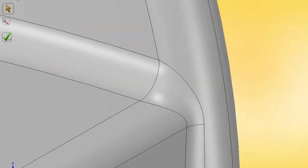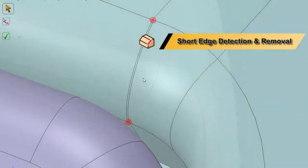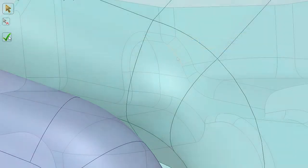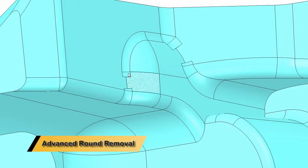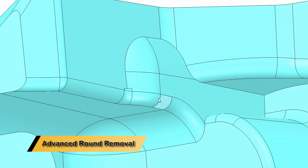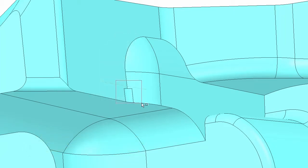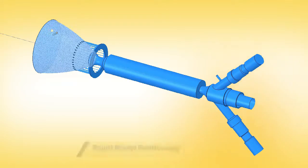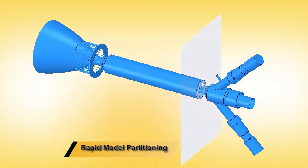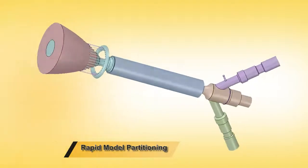Analysts often see a 10 times improvement in model simplification and pre-processing workflows. Quickly remove messy rounds or small features, instantly merge faces together, or imprint touching entities. The prepare tab is full of tools dedicated to helping analysts find optimal geometry results faster than ever.